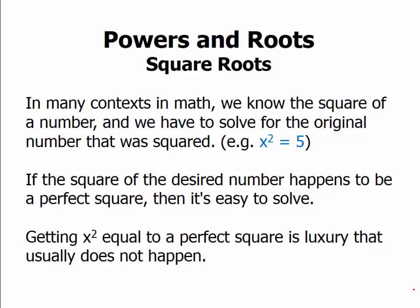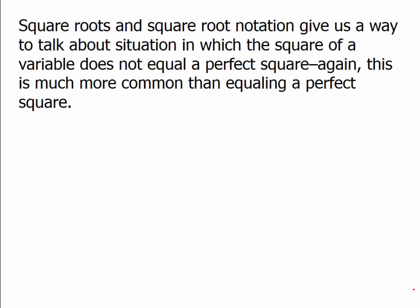If you consider all the numbers from 1 to 100 inclusive, only 10 of those are perfect squares; the other 90 are not perfect squares, and perfect squares become more and more rare as numbers get bigger. Square roots and square root notation give us a way to talk about the situation in which the square of a variable does not equal a perfect square.